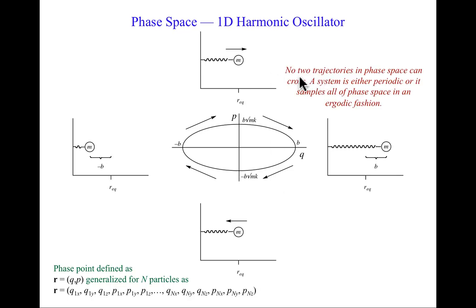No two trajectories in phase space can cross. A system is either periodic, in which case there are infinitely many trajectories none of which cross one another, or it samples all of phase space in an ergodic fashion. What ergodic fashion means is you will spend more time in the lower energy regions of phase space than in the higher energy regions. The density in phase space is associated with the usual rules of our universe—you are more probabilistically found at low energy than high.